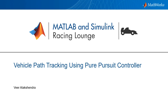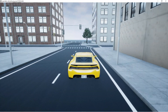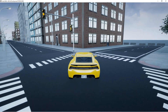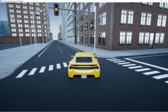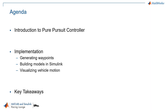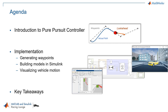Hello and welcome to the MATLAB and Simulink Racing Launch. In this video, we'll show how to implement a Pure Pursuit controller on a vehicle for path tracking. We'll see how you can build a vehicle path tracking model in Simulink and visualize the motion in various environments. We'll go through some of the basics of the Pure Pursuit controller, then implementation using Simulink, and finally the key takeaways.